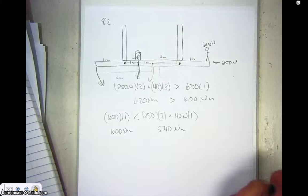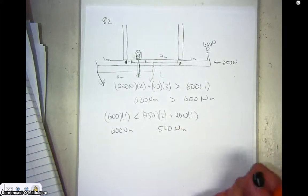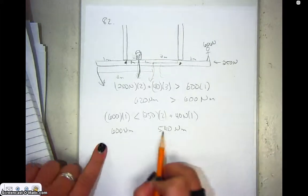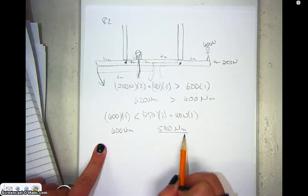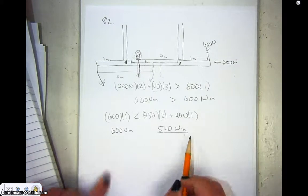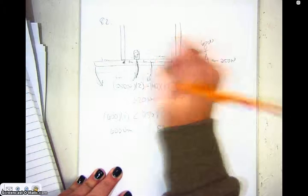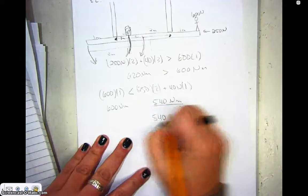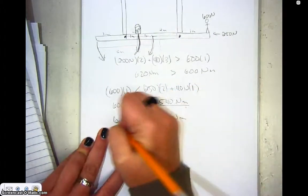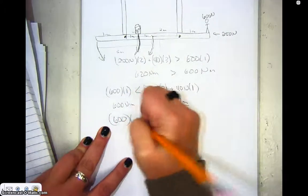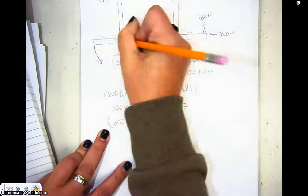So last part of the question is, well, how far can he safely walk? The distance that he could safely walk is when he exerted 540 newton meters of torque. Because we've got 540 newton meters this direction. So we're going to say 540 newton meters equal to his force, which is 600 times d, how far he can be from this pivot point.